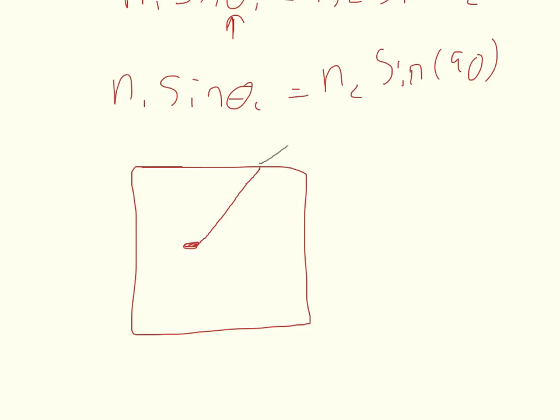whenever it leaves, it's going to have an index that's a little bit wider. So because this n2, we're going to call air, is n2, is lower, 1.000293, than zircone, which I think is 1.9 something off my head.